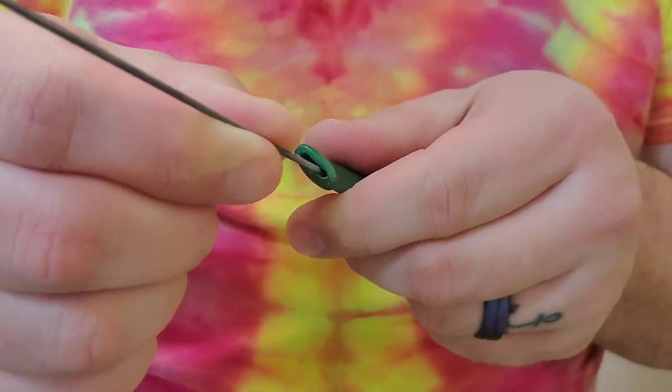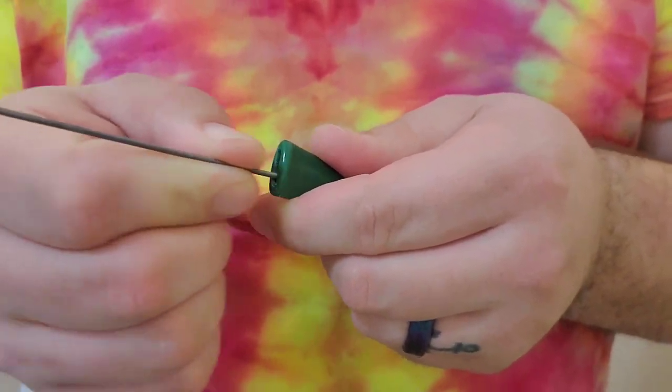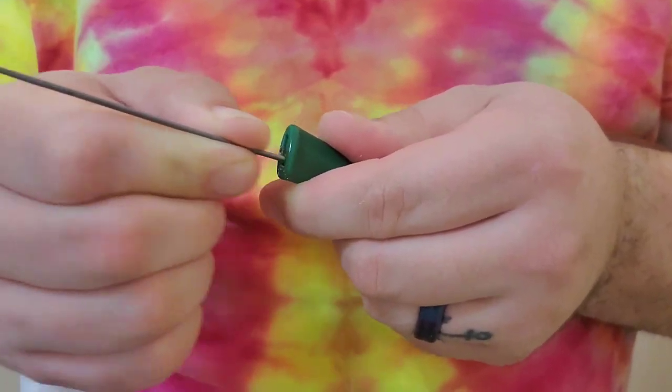So it's kind of slow going. I'm going to skip ahead. But this is the idea. You're going to want to do this on both sides of your v-slot.